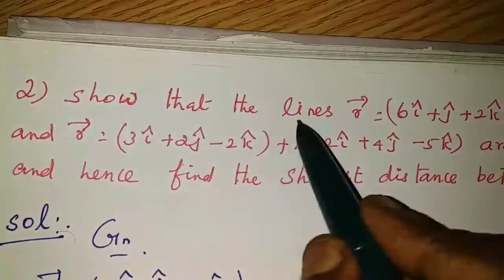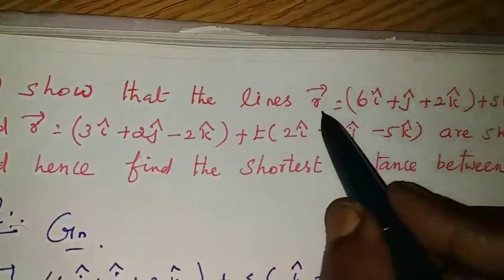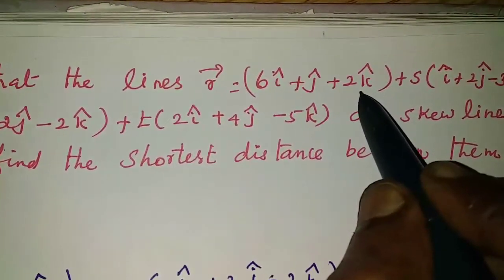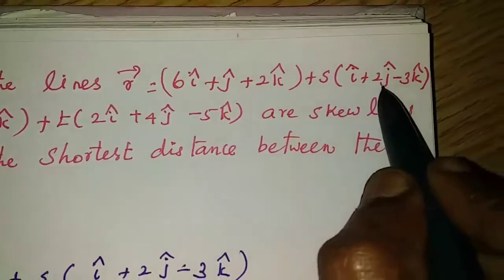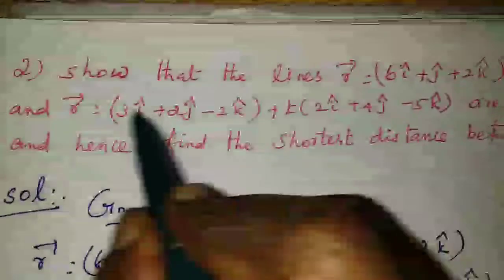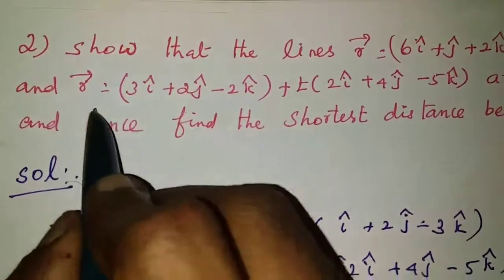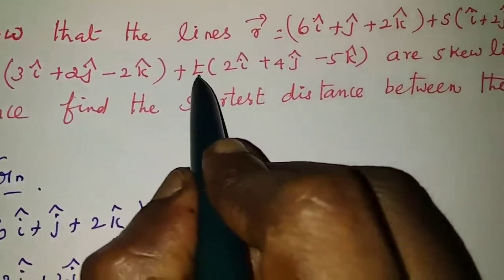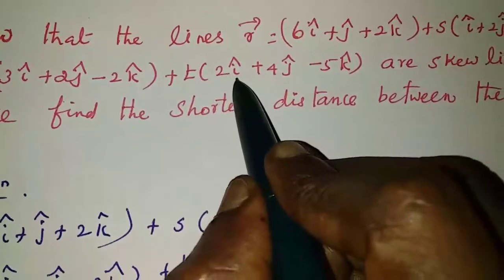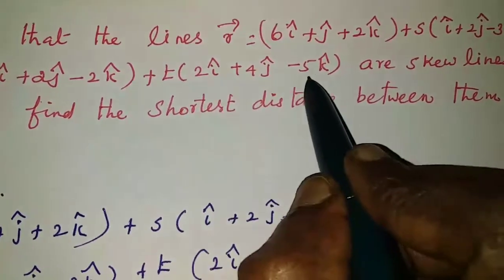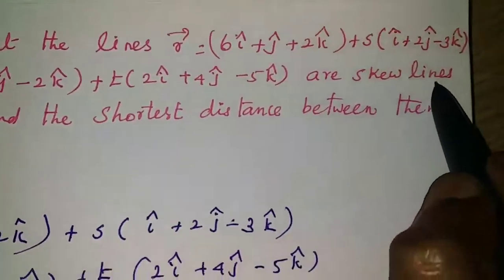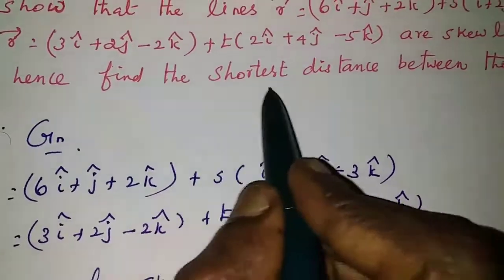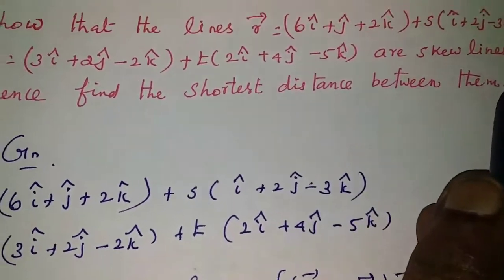Show that the lines R vector equal to 6i-cap plus j-cap plus 2k-cap plus s into i-cap plus 2j-cap minus 3k-cap, and R vector equal to 3i-cap plus 2j-cap minus 2k-cap plus t into 2i-cap plus 4j-cap minus 5k-cap are skew lines, and hence find the shortest distance between them.